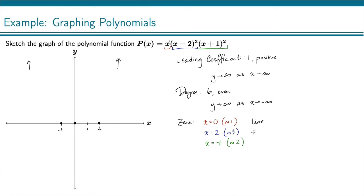With multiplicity 3, that's a cubic. x to the 3 is a cubic. So it's going to look like a cubic at x equals 2. And for multiplicity of 2, that is a quadratic, or a parabola. It's going to look like a parabola at x equals negative 1.